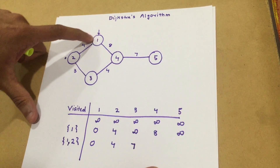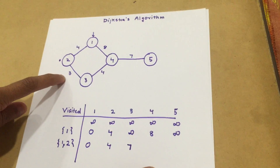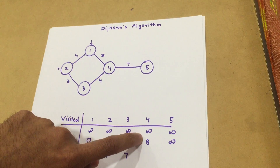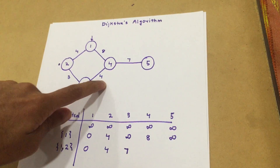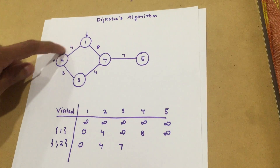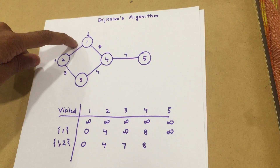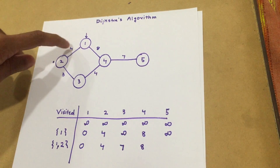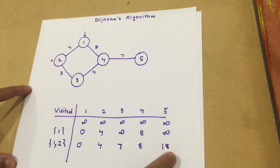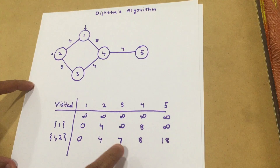Now to reach four via this path, the distance would be four plus three plus four, which is eleven. But the distance from one to four was already eight. Since eleven is greater than eight, we keep the distance as eight — we always choose the shortest path. For five, the distance going this way would be four plus three plus seven, which is eleven plus seven, equaling eighteen. Since it was infinity before, eighteen is less, so we put down eighteen.